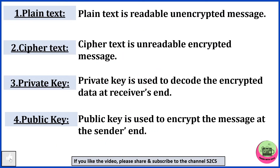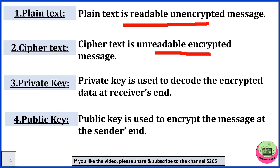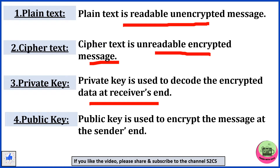What is plain text? It is a readable and unencrypted message — the ordinary data which the sender intends to send to the recipient. Next, cipher text: it is an unreadable encrypted message. It can't be read by humans; it's a string of random letters and numbers. Private key is used to decode the encrypted data at the receiver's end, and public key is used to encrypt the message at the sender's end.